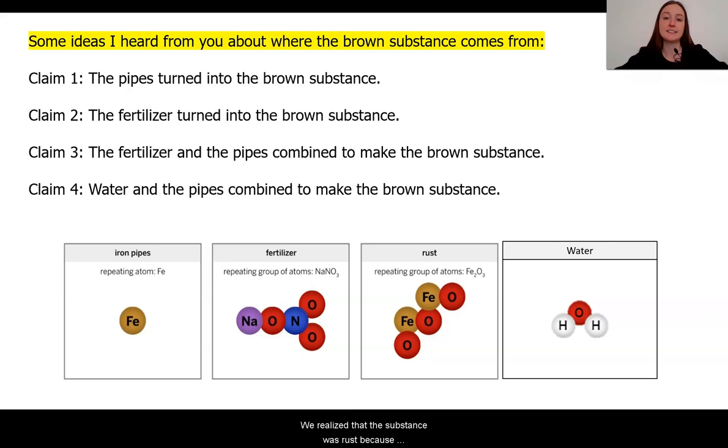We realized that the substance was rust because we were able to get a chemical sample analysis. In our previous lesson, we figured out that the iron pipes were made from repeating atoms of iron, which has the chemical symbol of Fe. So if we were to zoom into those pipes, we would see these atoms of Fe repeating over and over again.